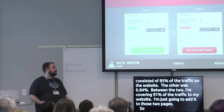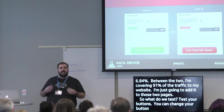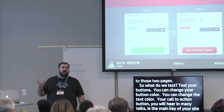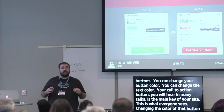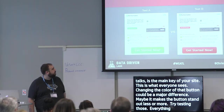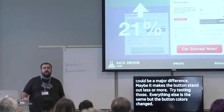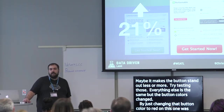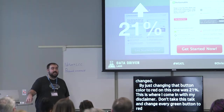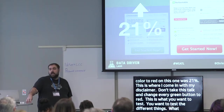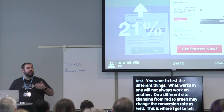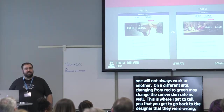What do we test? First, test your buttons — change button color, change text color. Your call-to-action button is the main key of your site, and changing its color could make a major difference — making it stand out more or less. On one site, just changing the button color to red gave a 21% increase. But my disclaimer: don't go change every green button to red. What works on one site won't always work on others — on a different site, changing red to green may work better. Test it — you get to show your designer the data proves it.